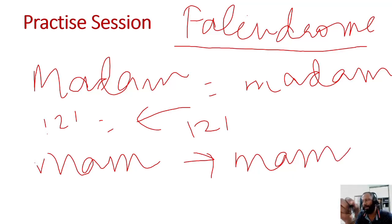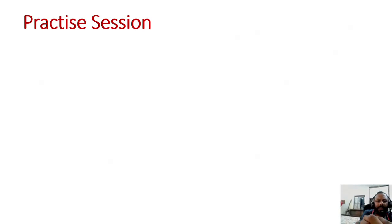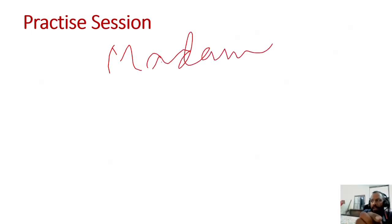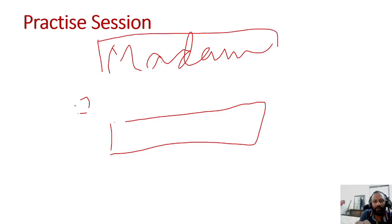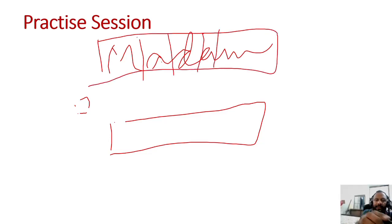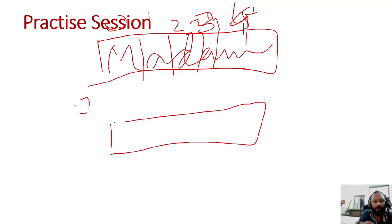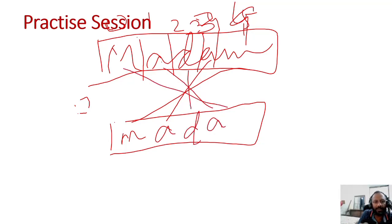So palindrome is 'ulta sida same' - a personal line. How to check it? We open RAM RAM. We can store this value. Suppose this is it - this is one, this is two, this is three, this is five - in fact four. This should come here as first, this should come here as second.